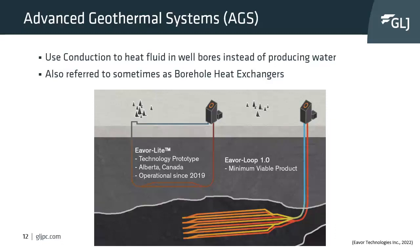The third type is advanced geothermal systems (AGS). Unlike conventional or enhanced systems which use convection, AGS uses conduction to heat fluid in the wellbores. Fluid is pumped down through the wellbores, heats up like a radiator, and comes back up to surface. A current example based in Alberta is Ever Technologies, which is piloting a project near Rocky Mountain House and trying to develop this technology worldwide.